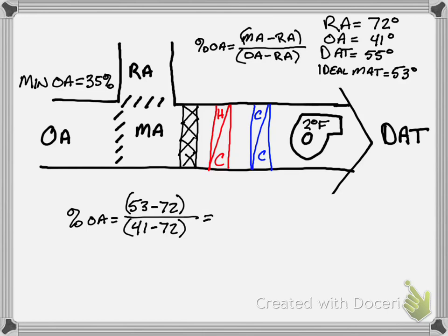So that's going to equal negative 19 over negative 31 which equals 61%. Now whenever we get a percentage and we need to determine whether our economizer can meet this, we have to understand two different things. One, what's the maximum outside air percentage that we can have? Typically in a functioning system, this is 100%. If you have a deficient system, this could be less than 100% if you have broken dampers or linkages.